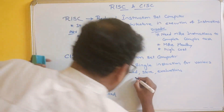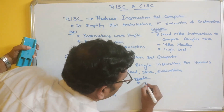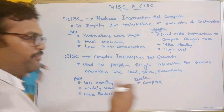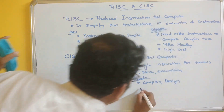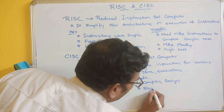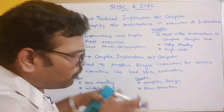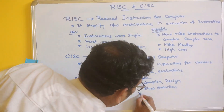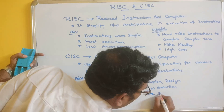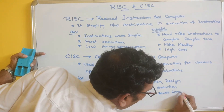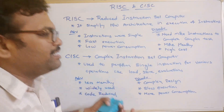Coming to the disadvantages of CISC: it has a complex design, because all operations must be performed in a single instruction. It also has slow execution, because even though the instruction is single it must perform different operations. And because execution is slow, more power is consumed — there is high power consumption.